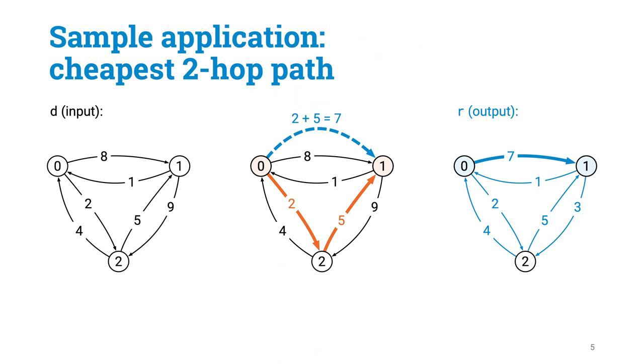And this is the problem that we want to solve. For every pair of points A and B, we want to know what is the cost of the cheapest route of getting from A to B by taking at most two hops.